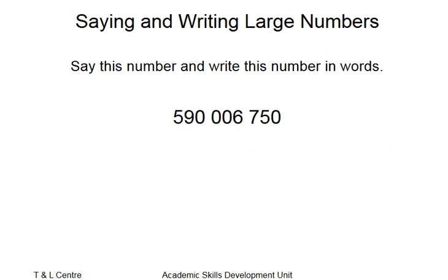Moving on to the next question. We've got another number here that we need to learn to say. This time I haven't put it in that chart arrangement to make it a little bit harder. So the first thing I'd suggest is you look at the first three digits — they're just your normal units, tens, hundreds. Then the next set of three is thousands, and then the next set of three is millions.